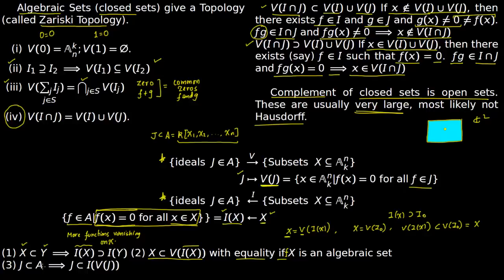The last property: if J is an ideal in A, then J is a subset of I(V(J)). This is easy to show. If F does not belong to I(V(J)), then F does not vanish on V(J) by definition. And therefore F does not lie in J, because if F lies in J then it must vanish on V(J) by definition.